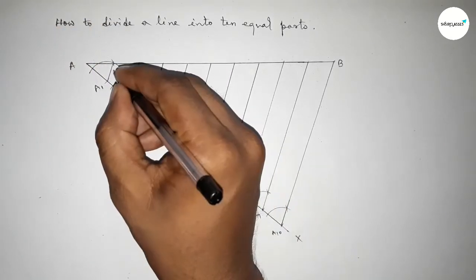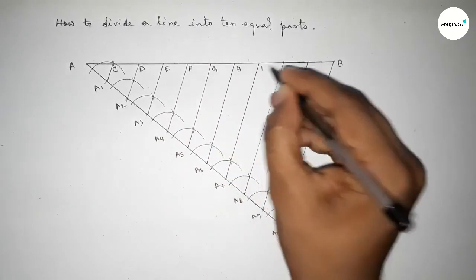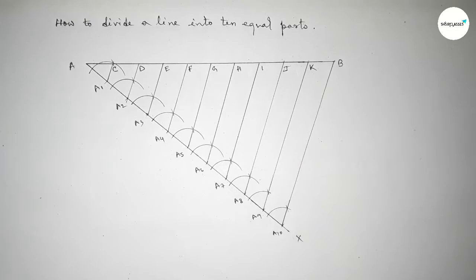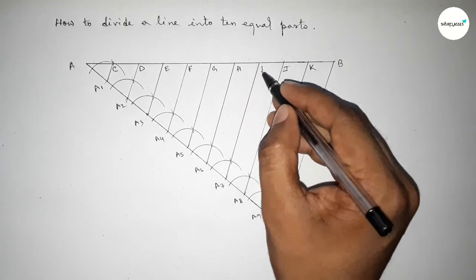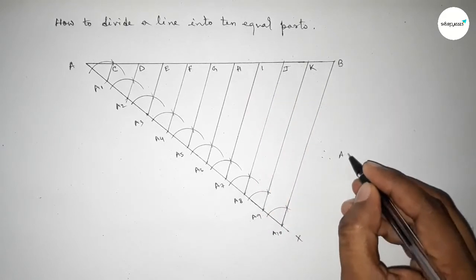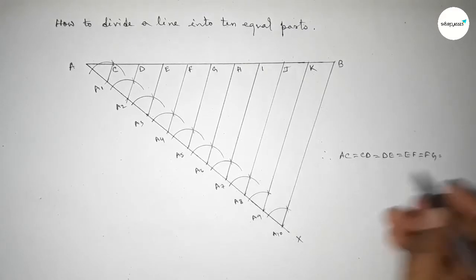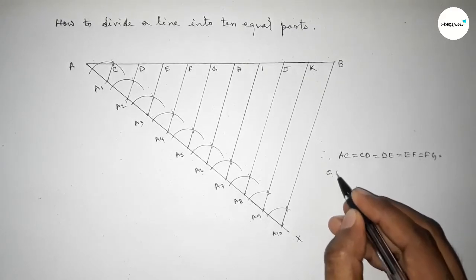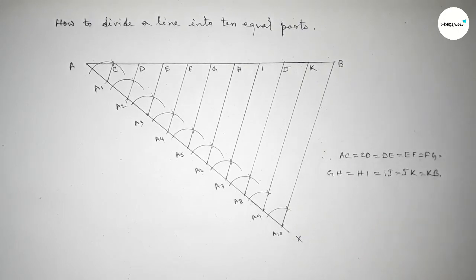Taking here points C, D, E, F, G, H, I, J, and K. Therefore: AC = CD = DE = EF = FG = GH = HI = IJ = JK = KB. So the line AB is now divided into 10 equal parts. That's all, thanks for watching!